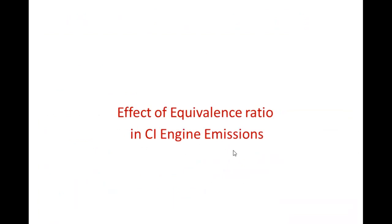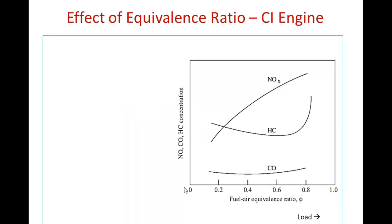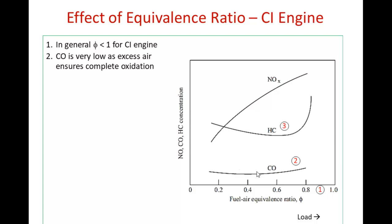Coming to the effect of equivalence ratio on CI engine emissions: CI engines are generally operated under lean condition, meaning equivalence ratio less than 1. In the diagram, concentration of emissions is plotted against equivalence ratio up to a maximum of 1 (stoichiometric). Three emissions are shown: CO2, unburned hydrocarbon, and NOx. The concentration of CO2 is very low because the CI engine operates under lean conditions with excess oxygen, resulting in complete combustion.